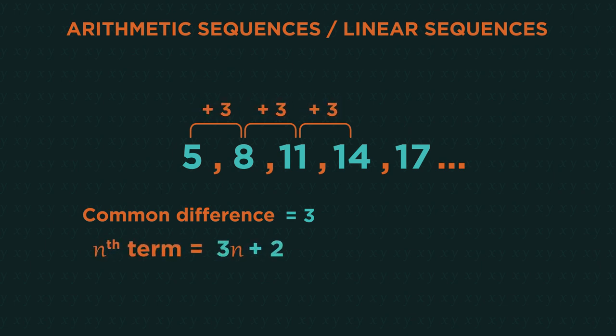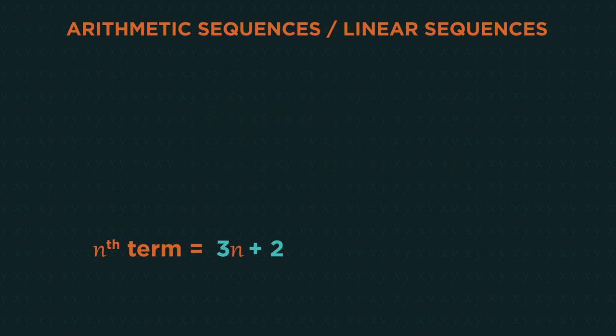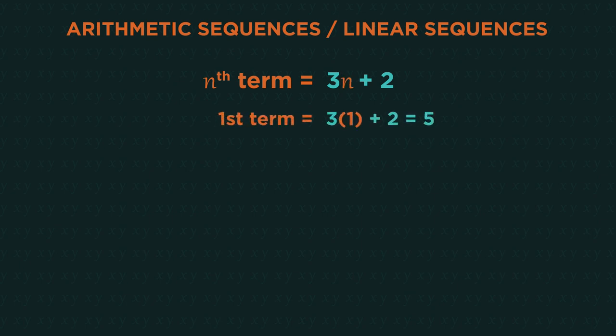The nth term for this sequence is 3n plus 2. We can use this to generate the sequence. The n stands for what term it is. So the first term, n is 1. Substitute 1 into the formula, 3 times 1 plus 2.